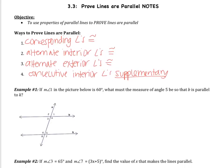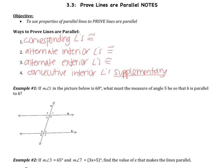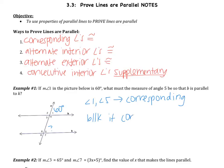Example 1: if the measure of angle 1 in the picture below is 60 degrees, what must be the measure of angle 5 so that B is parallel to K? It tells us that the measure of angle 1 is 60 degrees. We are looking for the measure of angle 5. Angles 1 and 5 are corresponding. We know that B is parallel to K if we have a pair of corresponding angles congruent. Therefore, angle 5 is also 60 degrees.